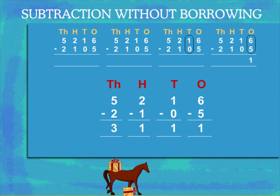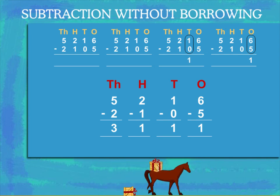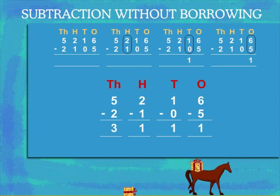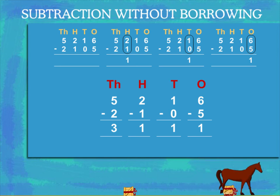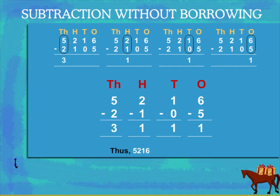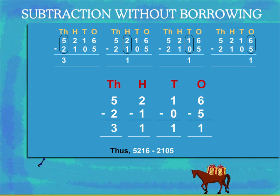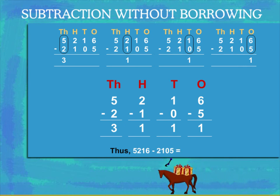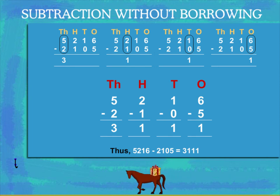One tenth minus zero is one tenth. Two hundreds minus one hundred is one hundred. Five thousands minus two thousands is three thousands. Thus, five thousand two hundred and sixteen minus two thousand one hundred and five is equal to three thousand one hundred and eleven.